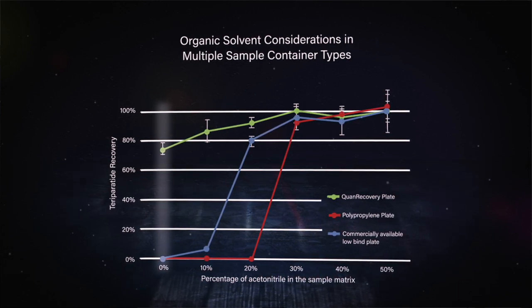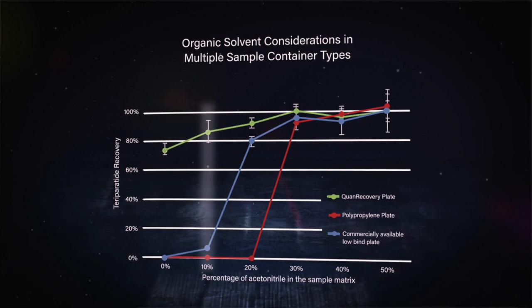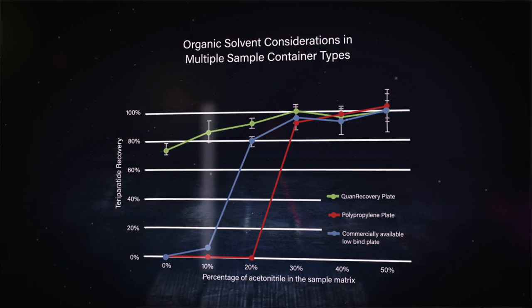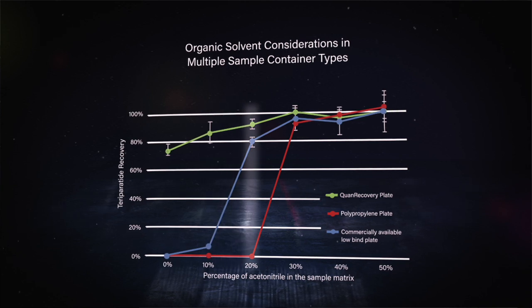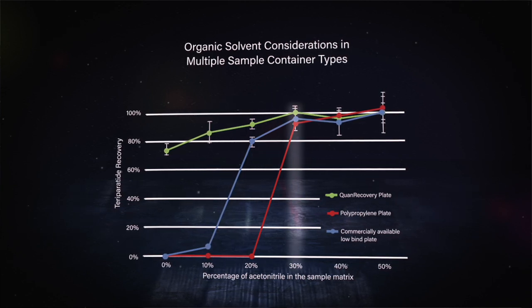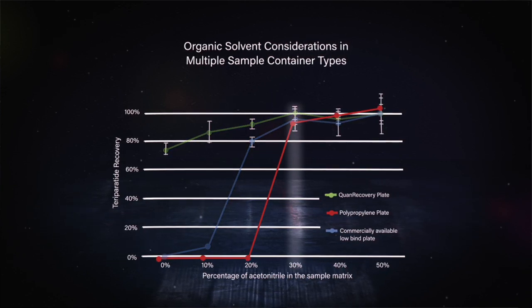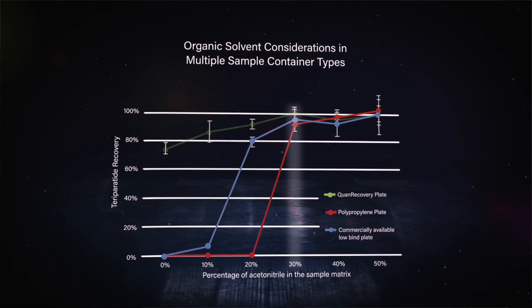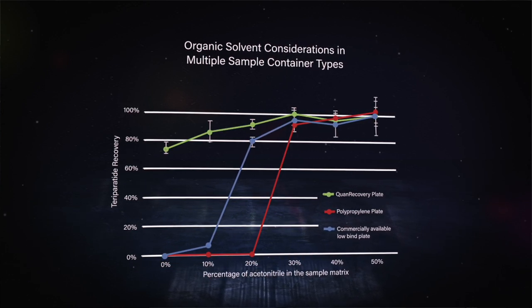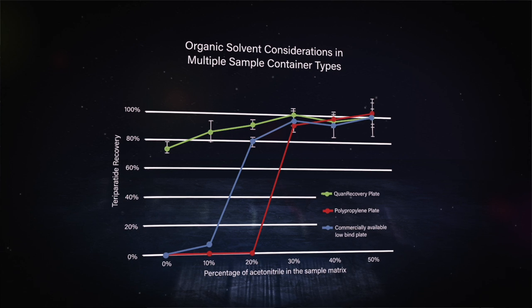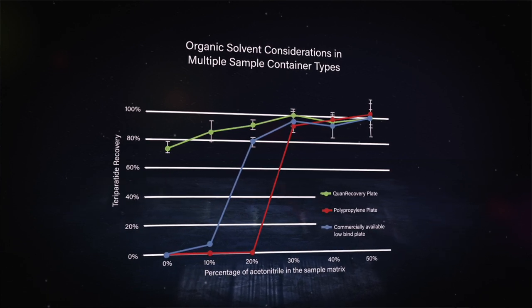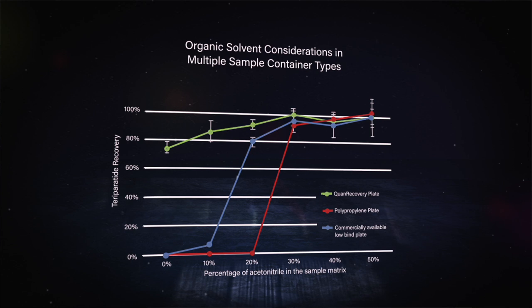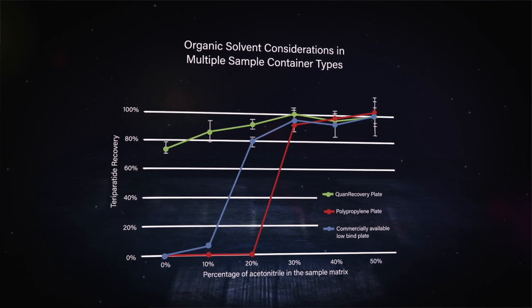As we get up to around ten percent, we're getting really good recovery in the Quan recovery plate. We have to get up to about 15 to 25 percent before we have that kind of recovery in the polypropylene and the other low-bind plate. I see that — but my question is, why not just stick with 30 percent acetonitrile? Yeah, it does look like you could go up to 30 percent acetonitrile and then it doesn't matter which plate you use.